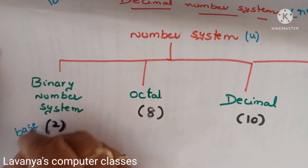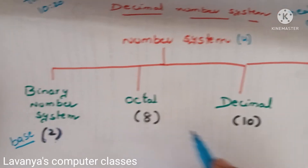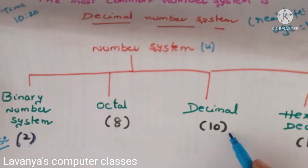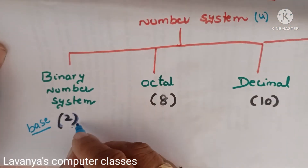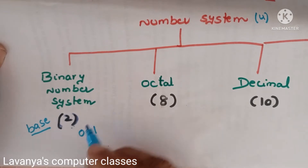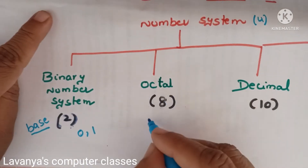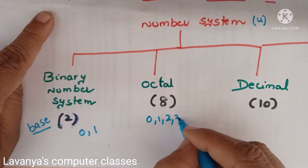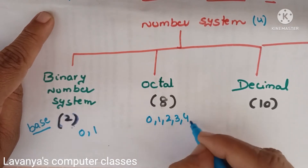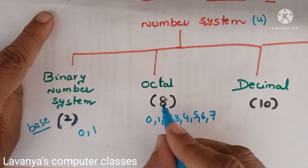The first one is the binary number system. Binary means 2, and that is represented as the base. So the binary number system base is 2. In the binary number system, there are only 2 values: 0 and 1. Every number starts with 0.